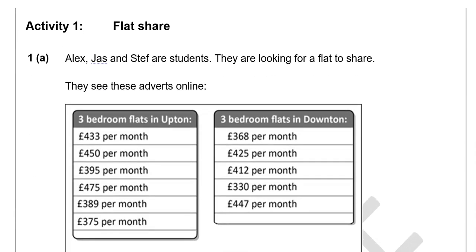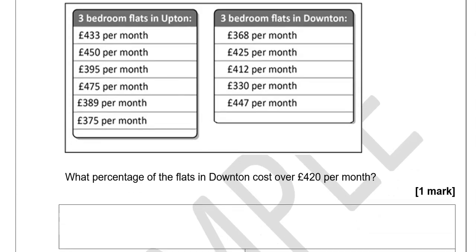Here is the first question: flat share. Alex, Jas and Steph are students looking for a flat to share. They see adverts online showing three bedroom flats in Upton and three bedroom flats in Downton with different prices per month. What percentage of the flats in Downton cost over £420 per month? So we're focusing on Downton and looking at prices above £420. £425 is above, but this one is not, and neither is this one. £447 is above as well.